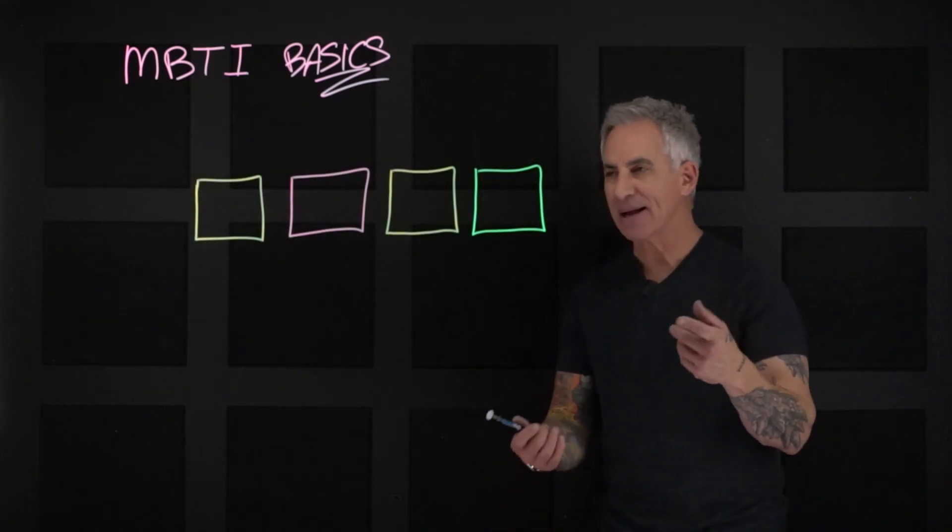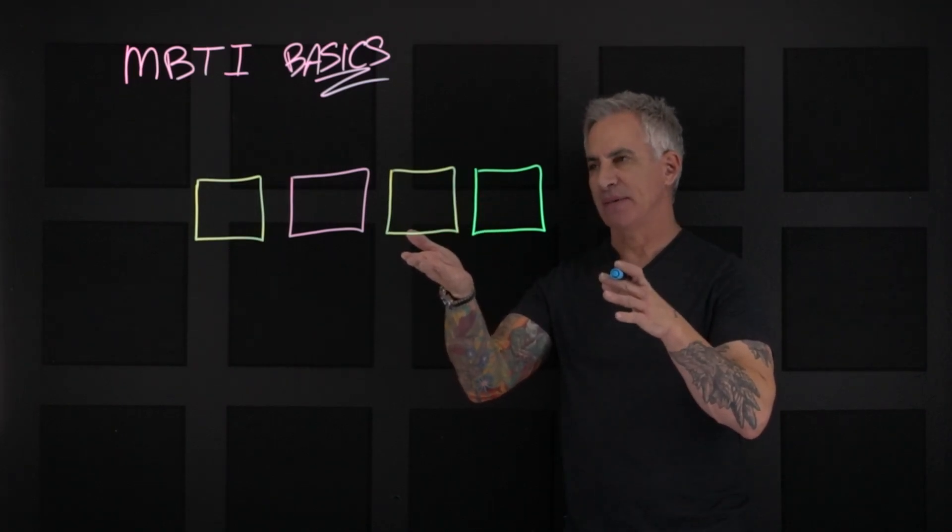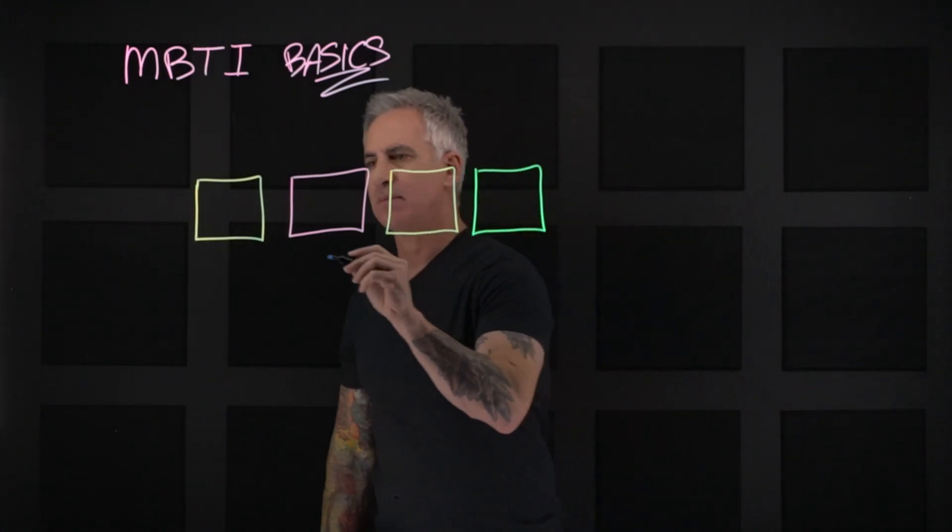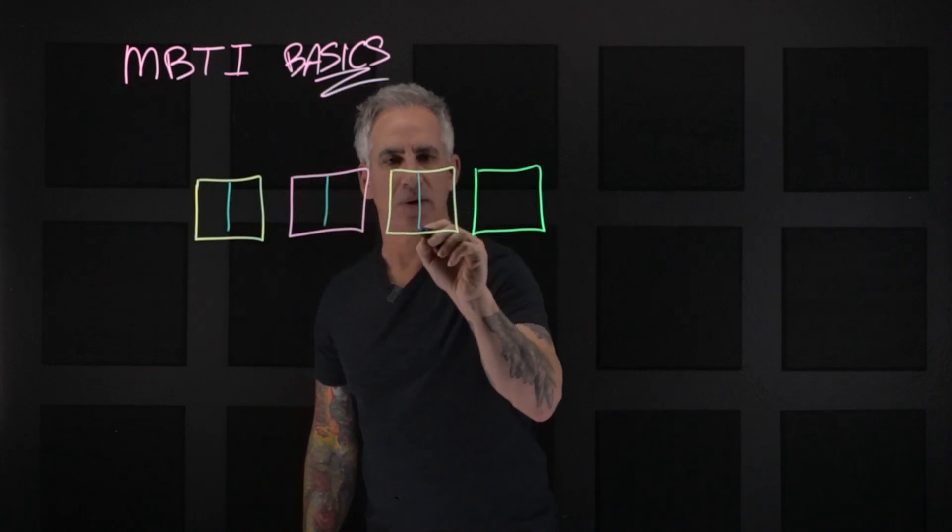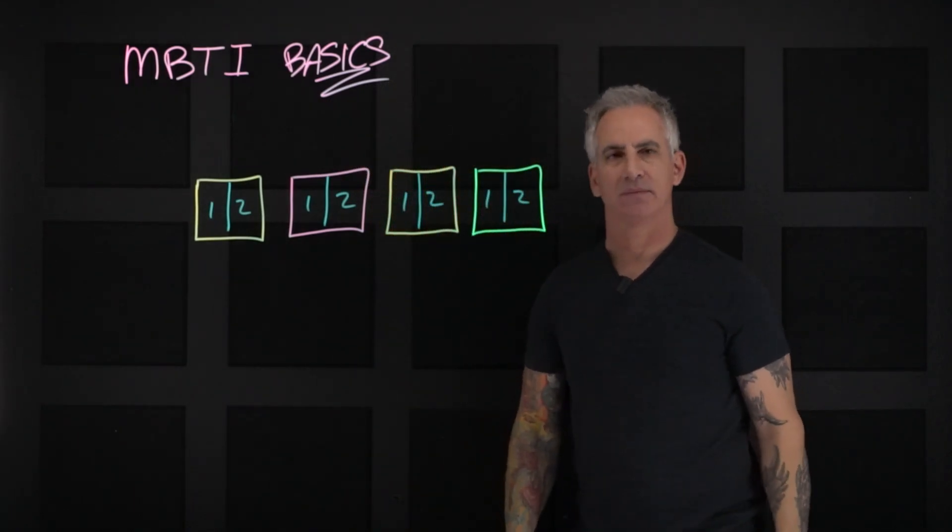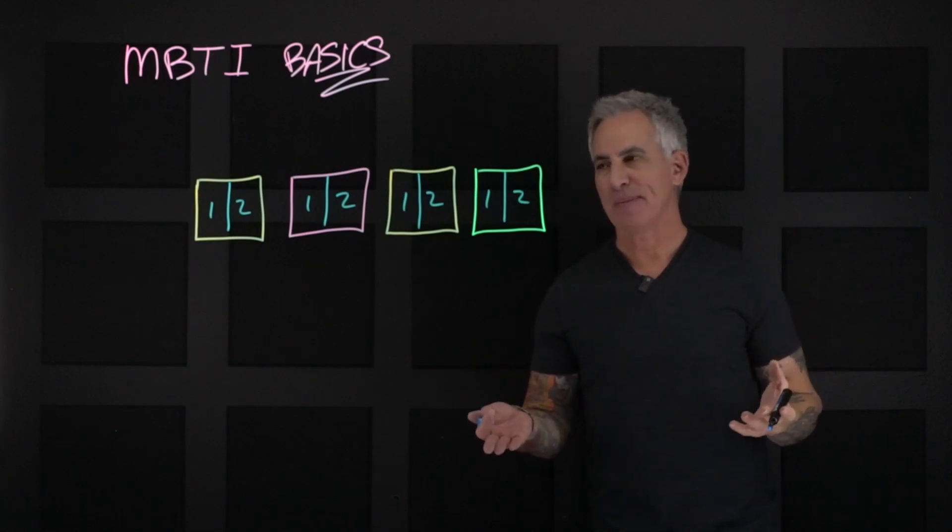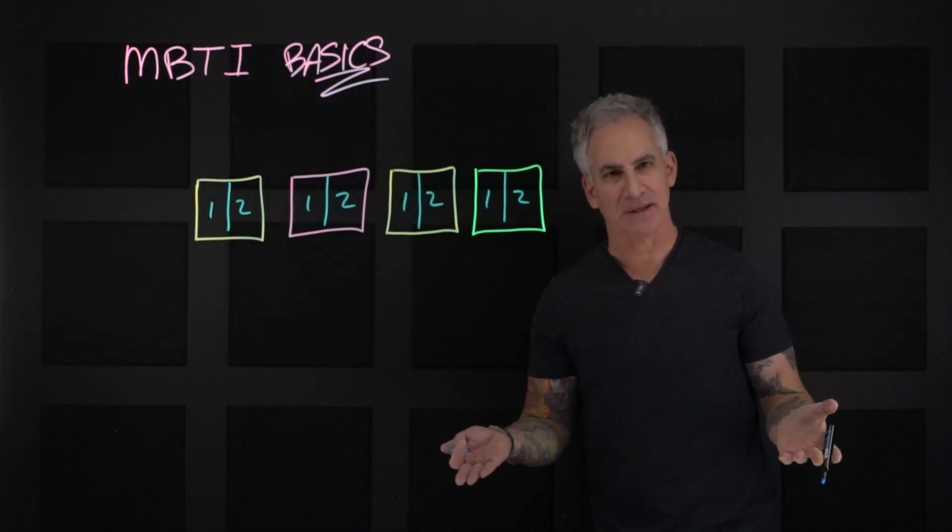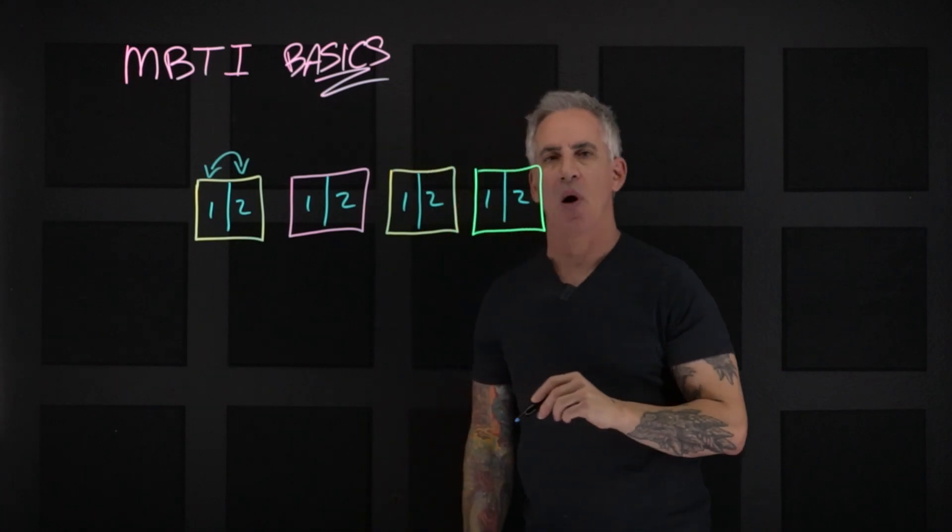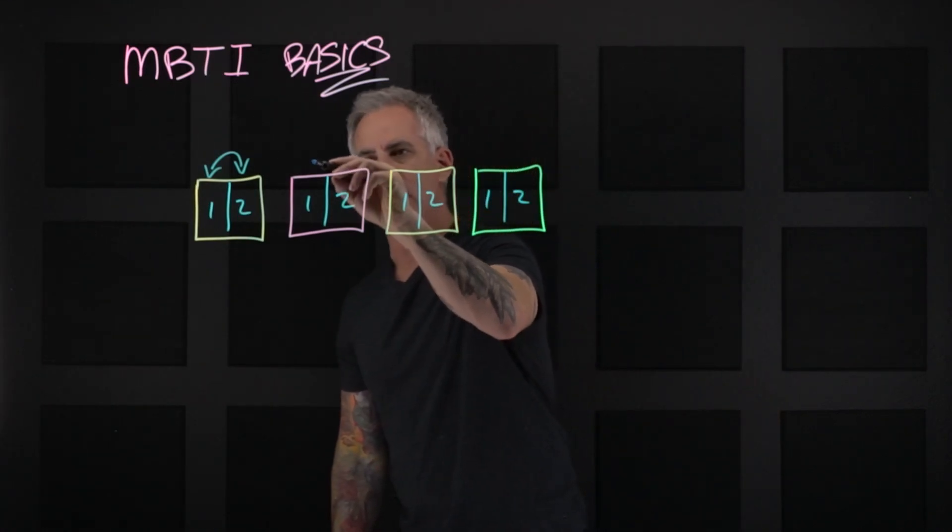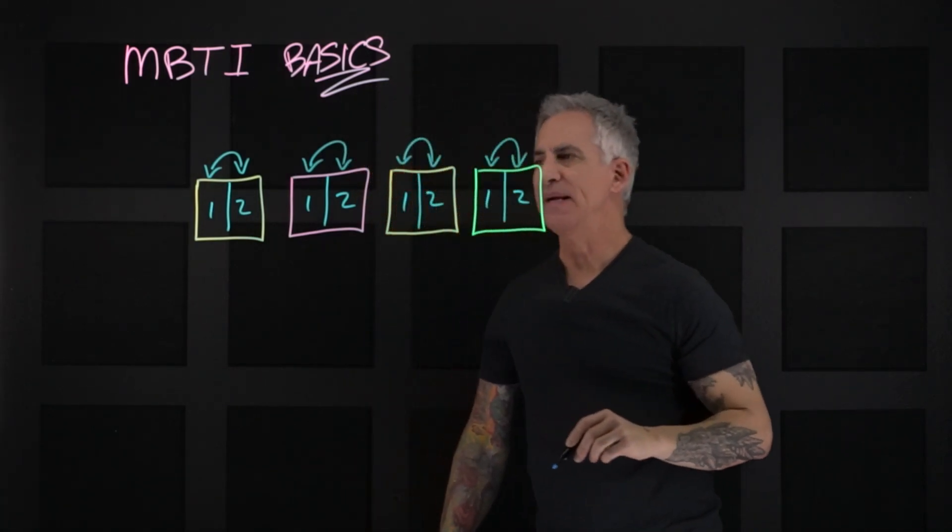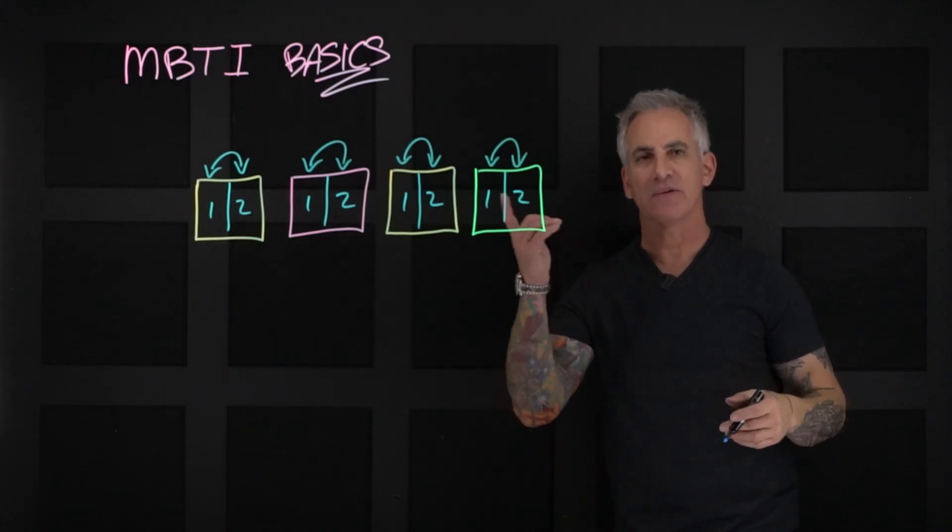Okay, welcome back. As you can see, we have four boxes. What these four boxes basically represent are two choices. I'll draw a line through each one of them. One, two, one, two, one, two.